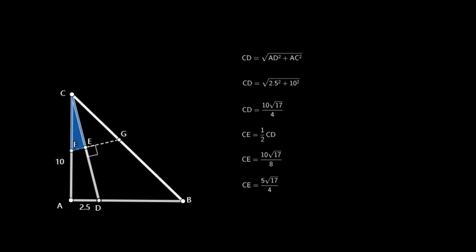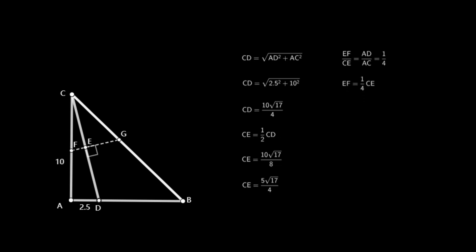Triangle CEF is similar to triangle CAD. So EF over CE equals AD over AC, which equals one quarter. Therefore EF equals one quarter times CE, which equals one quarter times 5 times the square root of 17 over 4, giving EF equal to 5 times the square root of 17 over 16.